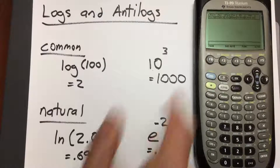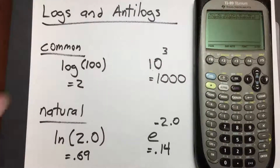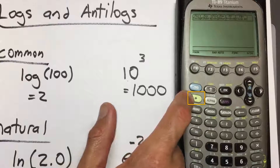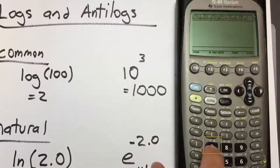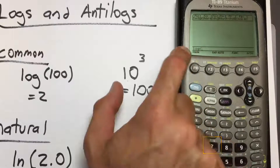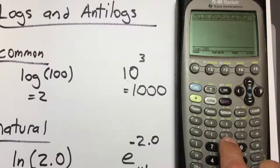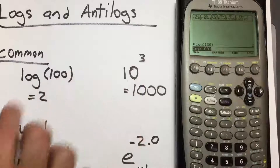For those of you using the TI-89, the way to take a common log is not obvious at all — most of the time you'd have to look this up. To access the common log, press the diamond key in green and then the number 7 on the keypad. This inputs LOG into the bar. Type the number you're taking the log of, close the parentheses, and press enter. We get 2, as expected.